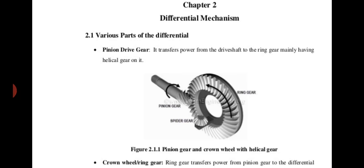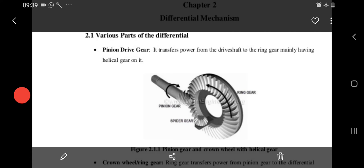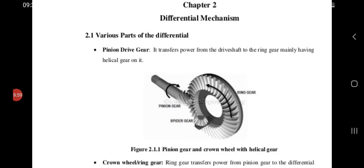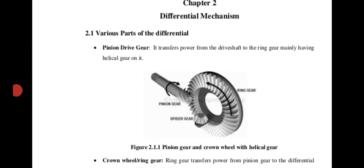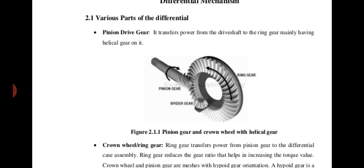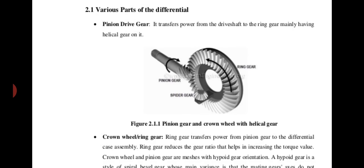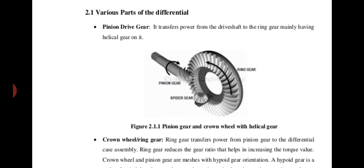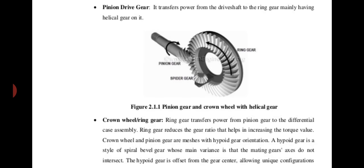Now we'll come to the parts of a differential. The first one is the pinion gear — the pinion gear receives power coming from the engine. The next thing is the ring gear, which rotates and transmits power at 90 degrees. This is the most important function of the ring gear. Then you have the spider gear, which is attached to the ring gear. The pinion drive gear transfers power from the drive shaft to the ring gear and mainly has helical gears on it.